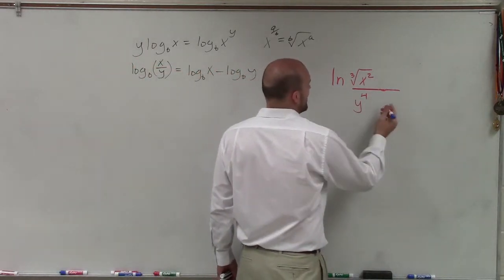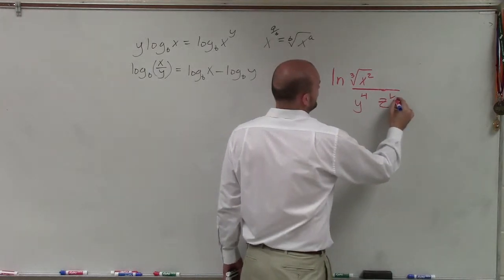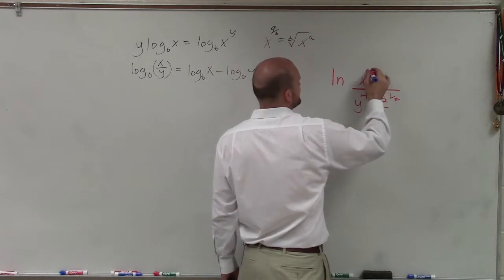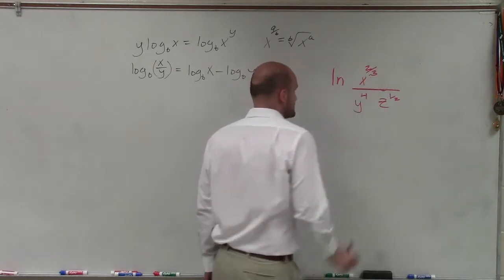Now remember, I can rewrite z to the 1 half power. Actually, I'm going to leave that there. But I'm going to rewrite the cube root of x squared. I'm going to write that as x to the 2 thirds power.